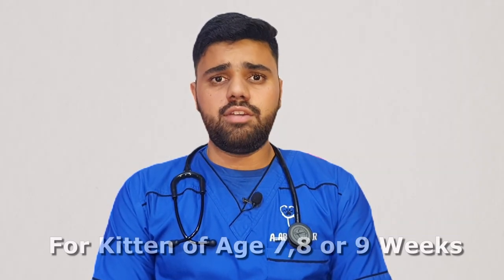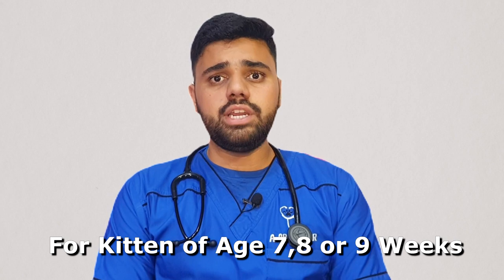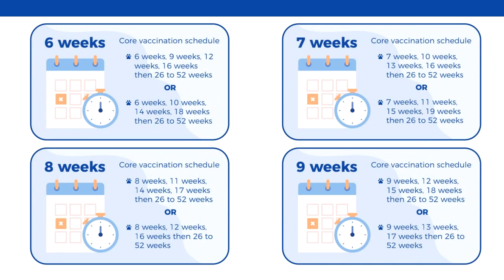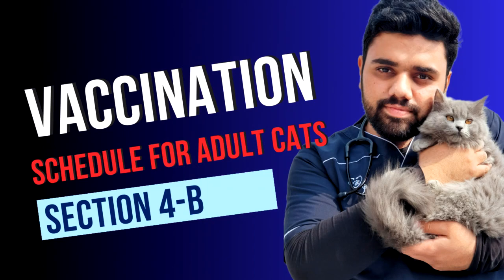After these four booster doses, you have to give annual doses of PCH and rabies vaccine. If you have started your kitten's vaccination at week seven, week eight, or week nine, then there are some other schedules available, but remember at least four doses of vaccination should be injected.